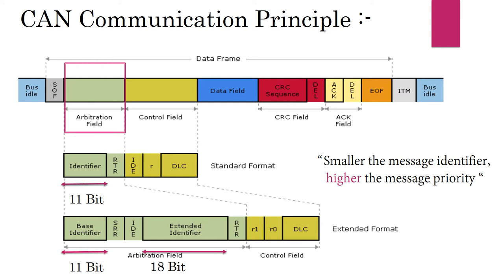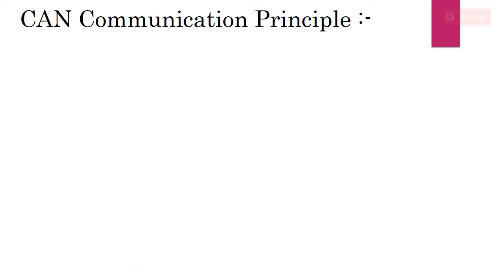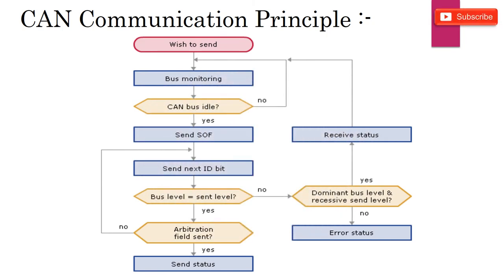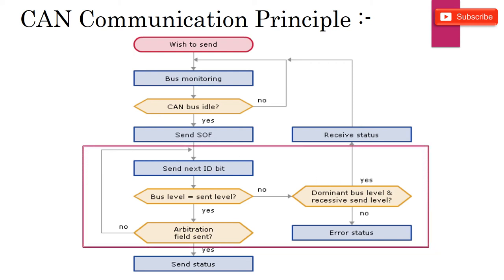Let's try to understand how arbitration works with some examples. We can also understand this principle with the help of a flowchart. A node wishing to send a message has to wait until the bus becomes idle. If the bus is idle, it sends the start of frame bit, a dominant bit, to take the bus access. Then it sends the message identifier in most significant bit or MSB first fashion.